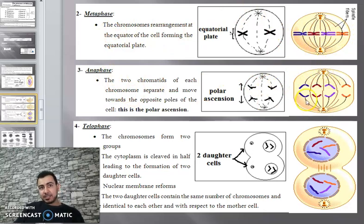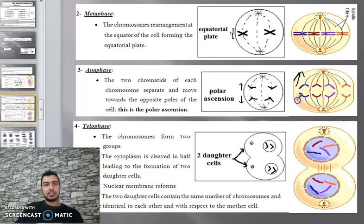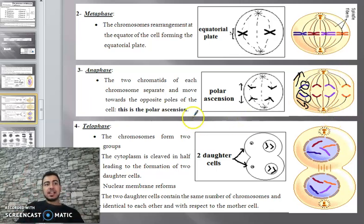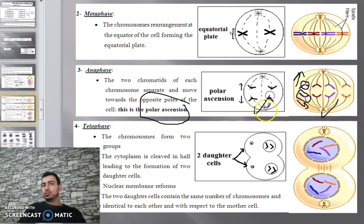Then during anaphase, each aster pulls the spindle fibers in opposite directions — toward the two poles. What happens is the chromatids of each chromosome separate from each other. This is called polar ascension — the separation toward the poles. This figure shows 2n equal to 4.